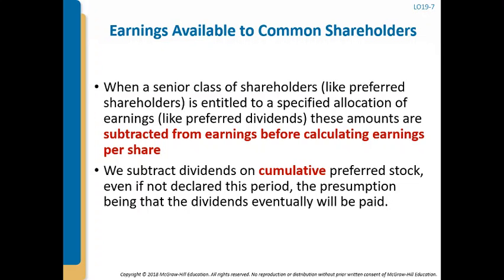Now when looking at the numerator: when you have a senior class of shareholders such as preferred shareholders, these shareholders are entitled to a specified allocation of earnings, such as preferred dividends. These amounts are subtracted from earnings before calculating earnings per share. We subtract dividends on cumulative preferred stock even if not declared in a particular period, because the presumption is that they're going to have to be paid eventually.